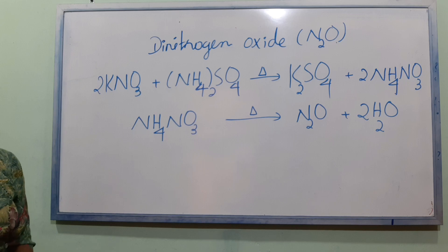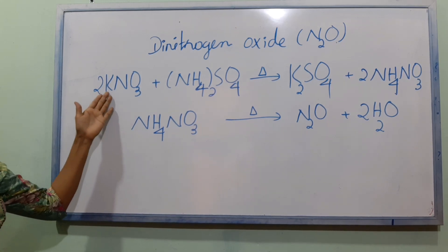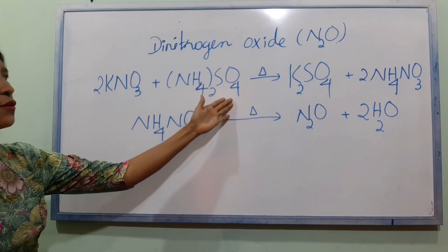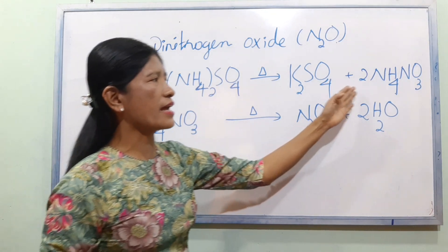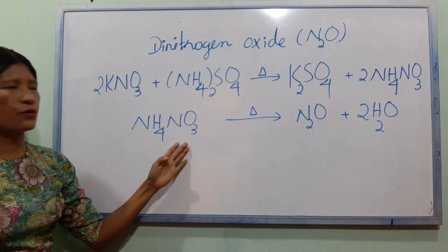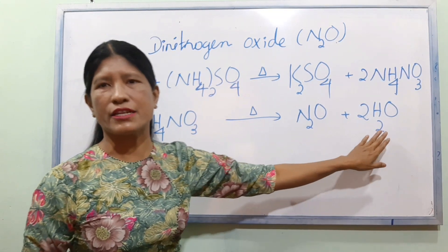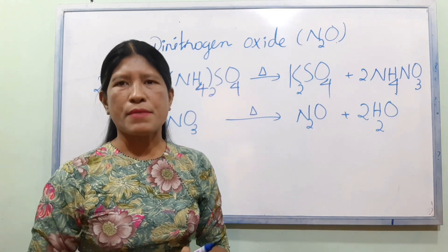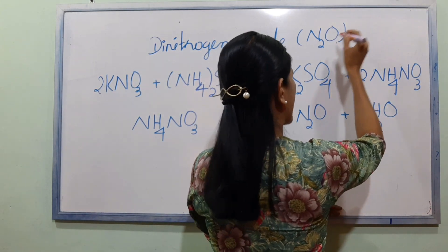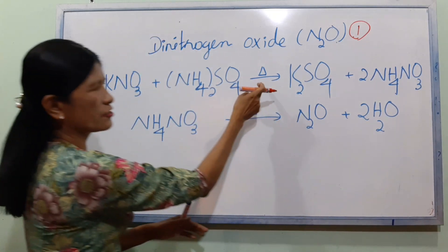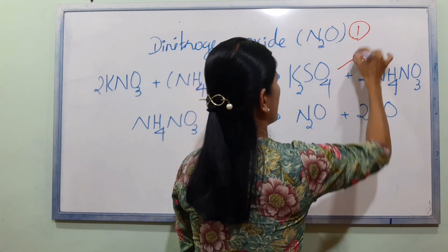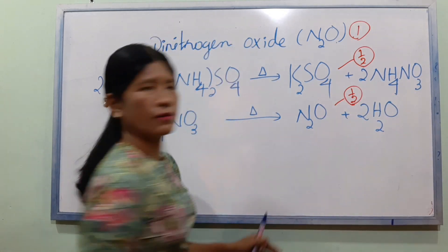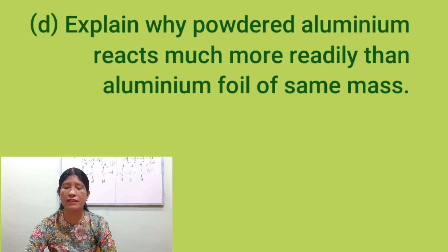The solution is N₂O. Number D: Explain why powdered alumina reacts much more rapidly than aluminium filings.